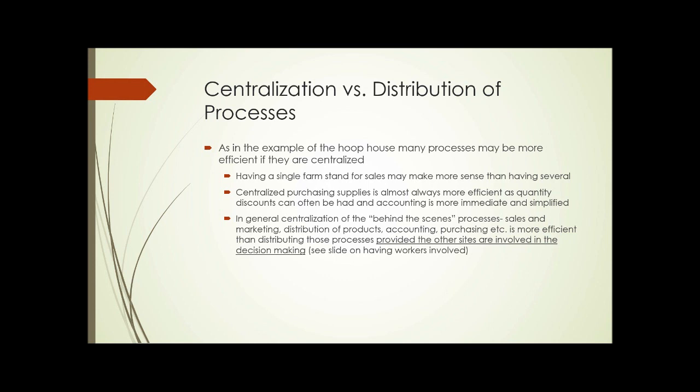That brings us to the idea of centralization versus distribution of processes. With the hoop house example in mind, many processes may be more efficient if centralized. Having a single farm stand for sales may make more sense than having several. You may be able to sell materials from multiple locations using the same physical building and possibly the same number of workers. Centralized purchasing of supplies is almost always more efficient — quantity discounts can often be had, and accounting is more immediate and simplified.